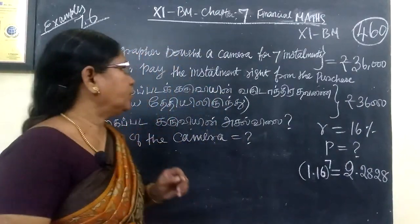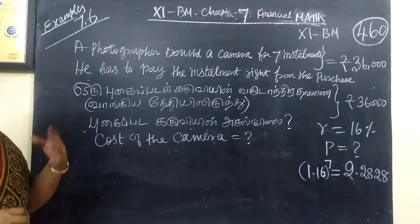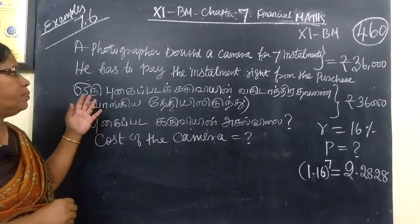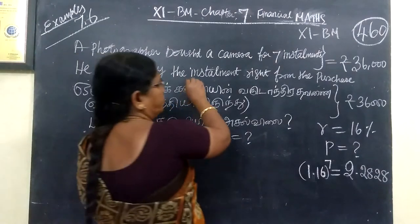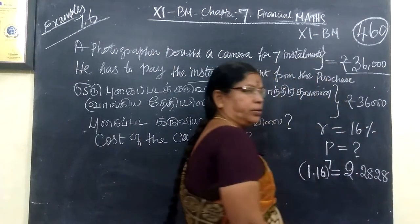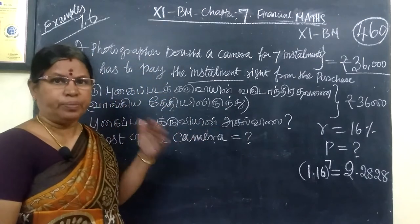A photographer bought a camera for 7 installments. And immediately he is paying the first installment 36,000 rupees. The camera is owned, immediately he is paying.